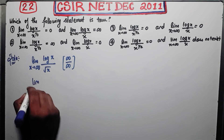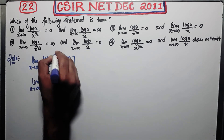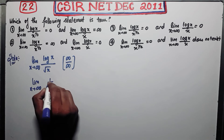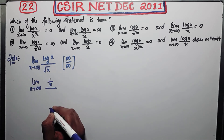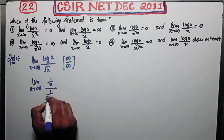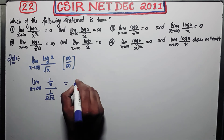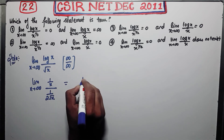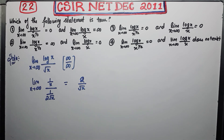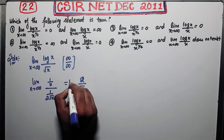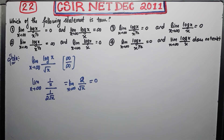So I'm going to use L'Hôpital's rule. Differentiate the numerator with respect to x — you get 1 over x. Differentiate the denominator with respect to x — you get 1 over 2√x. So this simplifies to 2 over √x. As x goes to infinity, you get 0 as your answer.